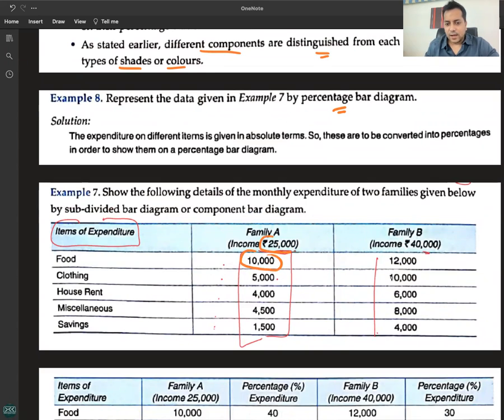Same example 7. The percentages calculated: 10,000 by 25,000 equals 40 percent. Then 10 by 25 gives 40%, 5 by 25 gives 20%, 4 by 25 gives 16%, 1.5 by 25 gives 6%. Similarly calculating for the other family to get 30%, 25%, 15%, 20%, and 10%.